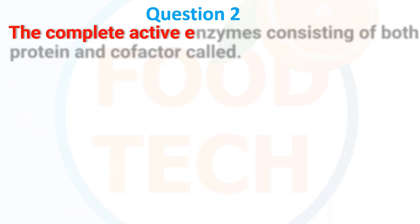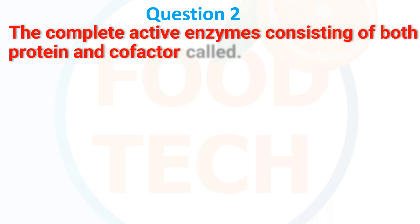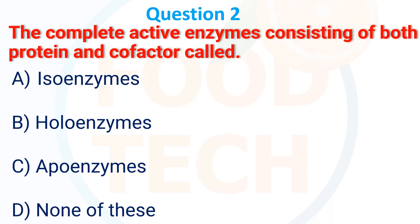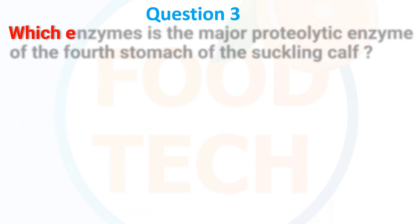The complete active enzyme consisting of both protein and cofactor is called: A. isoenzyme, B. holoenzyme, C. apoenzyme, D. none of these. The answer is B, holoenzyme.